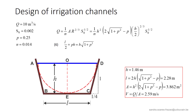Here is an example of calculation. We look for the optimal cross section to convey a discharge of 10 cubic meters per second, with given values of the bed slope, the bank slope, and the friction coefficient. In the expression for the discharge, we have replaced L using relation 6. Solving this equation gives H equal to 1.46 meters. From there, we obtain the other dimensions: L equals 2.28 meters. We see that the depth is relatively large compared to the width at the bottom — a deep cross section results from this optimal procedure.